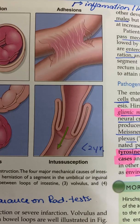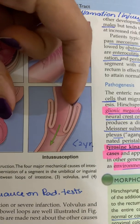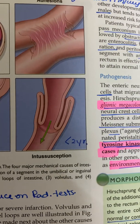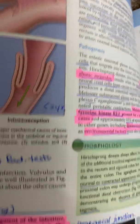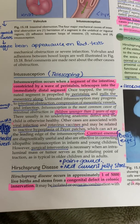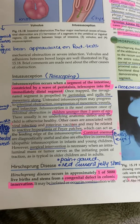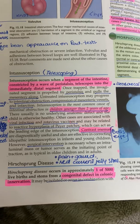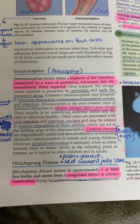Intussusception, also known as telescoping, is when a segment of the intestine is constricted by a wave of peristalsis and telescopes into a segment that is distal to it. It is mostly occurring in children less than two years of age. When it goes into the distal segment, it takes the mesentery along with it.